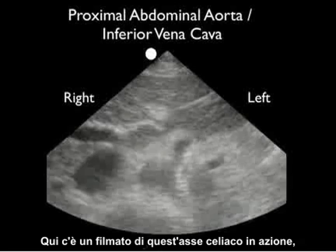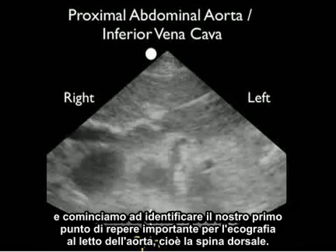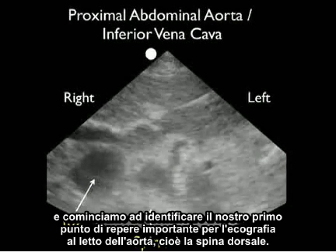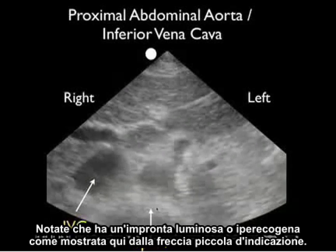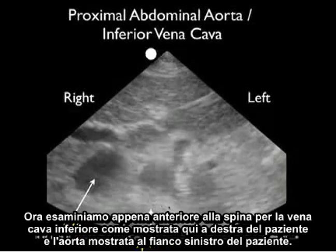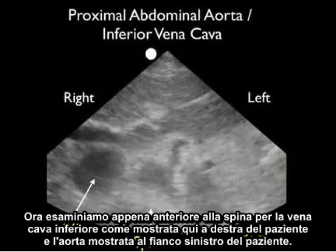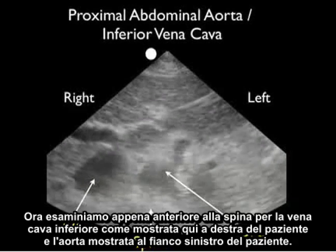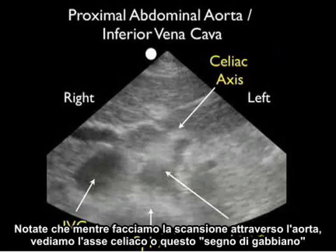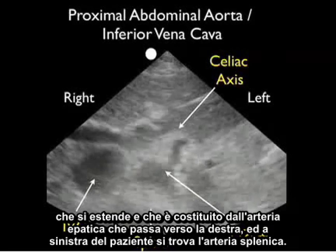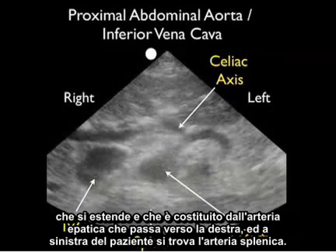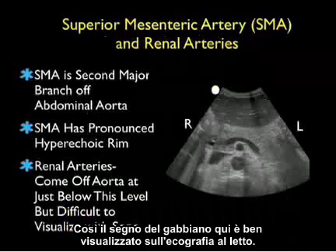Here's a video clip of the celiac axis in action. We'll begin by identifying our first very important landmark for bedside ultrasound of the aorta, and that is the spine. Notice it has a hyperechoic or bright signature, as shown here by the small indicator arrow. We'll be looking just anterior to the spine for the IVC, shown to the patient's right, and the aorta, shown to the patient's left side. As we scan through the aorta, we see the celiac axis, or the seagull sign, made up of the hepatic artery going to the right side and the splenic artery to the patient's left. The seagull sign is well seen on bedside ultrasound.